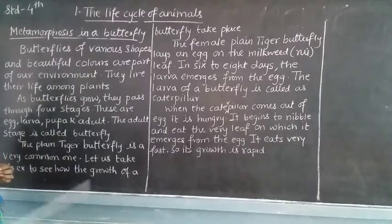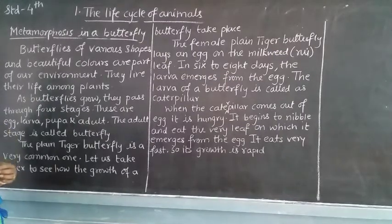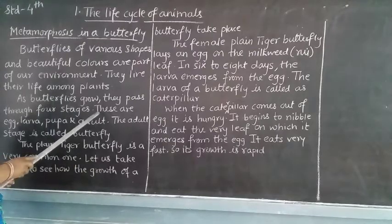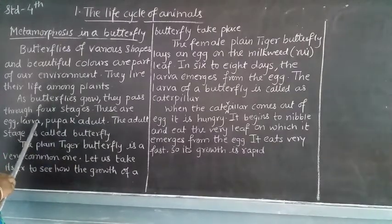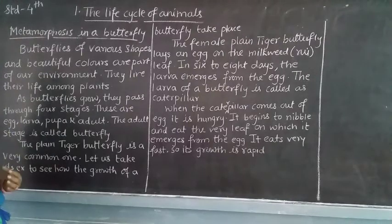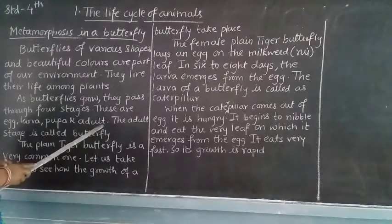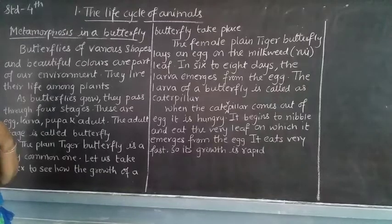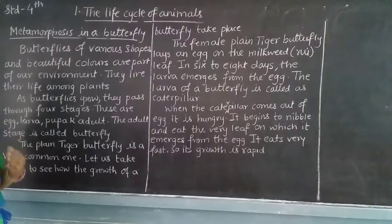Butterflies live their life among the plants, as they are dependent on plants. As butterflies grow, they pass through 4 stages. These 4 stages are nothing but egg, larva, pupa, and adult. The adult stage is called a butterfly.